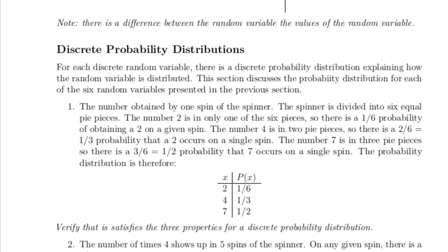So if we build a probability distribution for this, there's one chance in six of getting a two, since there were six pie pieces in the spinner. There's one chance in three — that is two chances in six — of getting a four. And there are three chances in six, or one half, probability of getting a seven. So the probability distribution shows how the random variable is distributed.